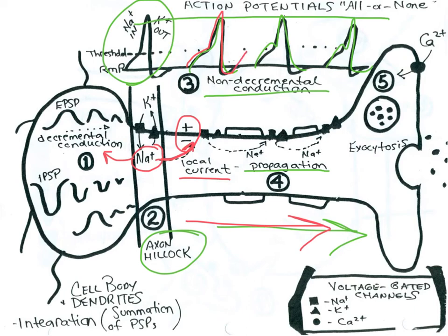Sodium comes in, potassium leaves — depolarization, repolarization. The sodium that comes in then diffuses and generates another action potential. The reason it's not generating an action potential in the retrograde direction, towards the cell body, is because that part of the membrane is now in the refractory period. So it's impossible to generate an action potential in that direction. This ensures the one-way propagation of action potentials away from the cell body.